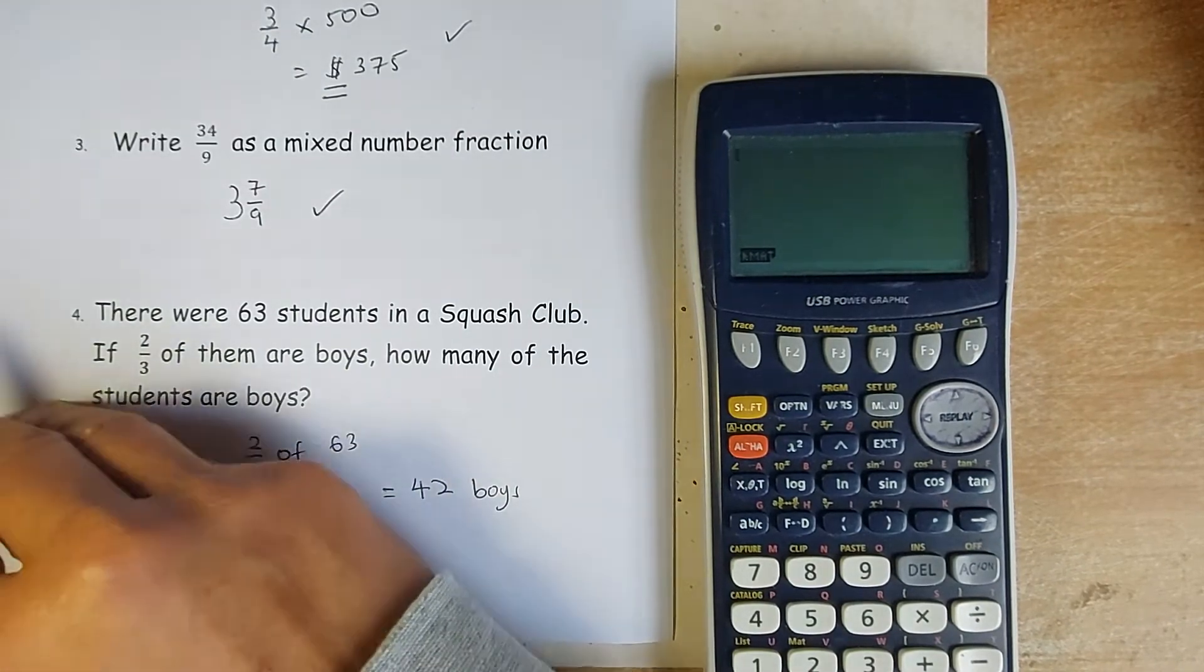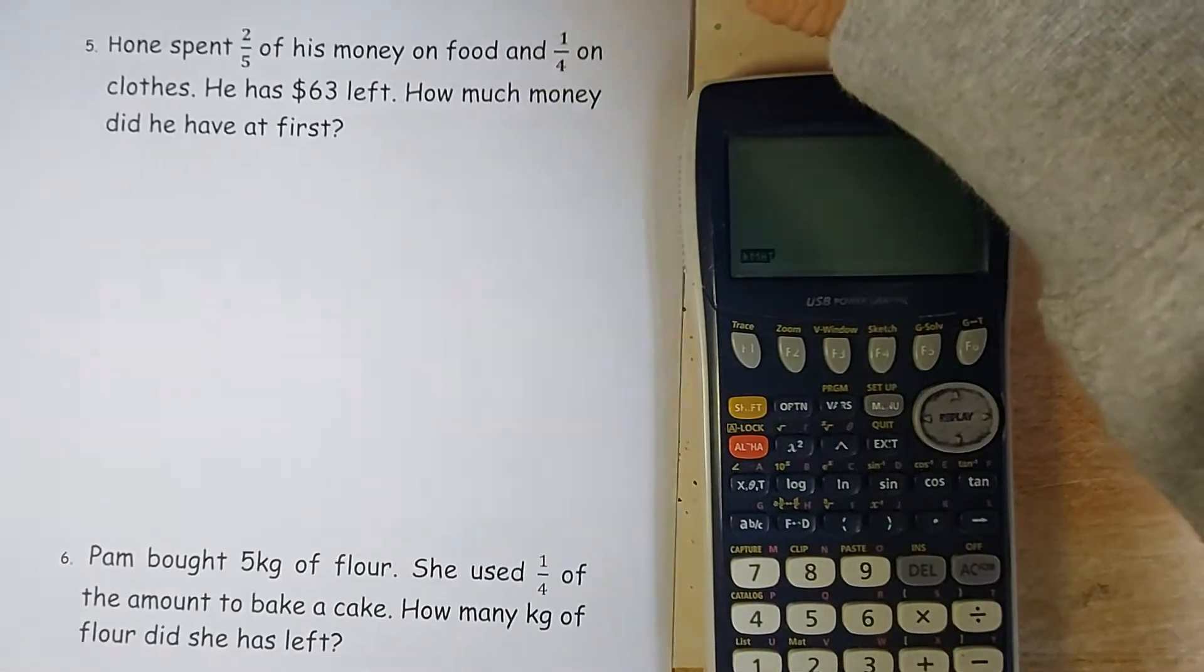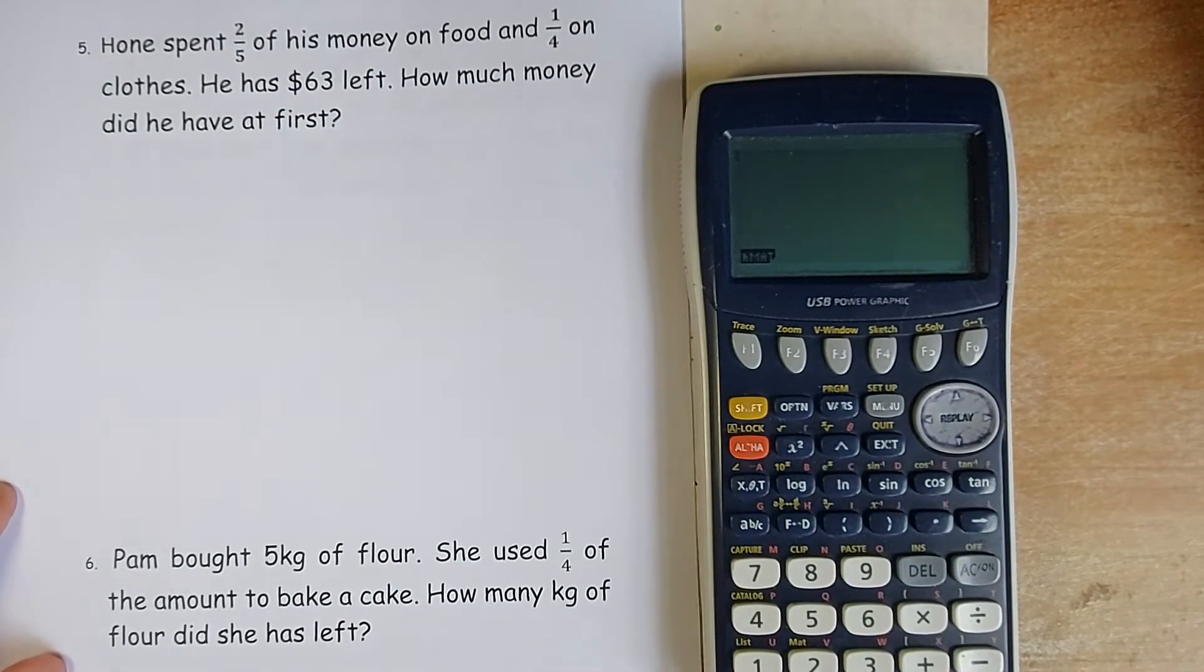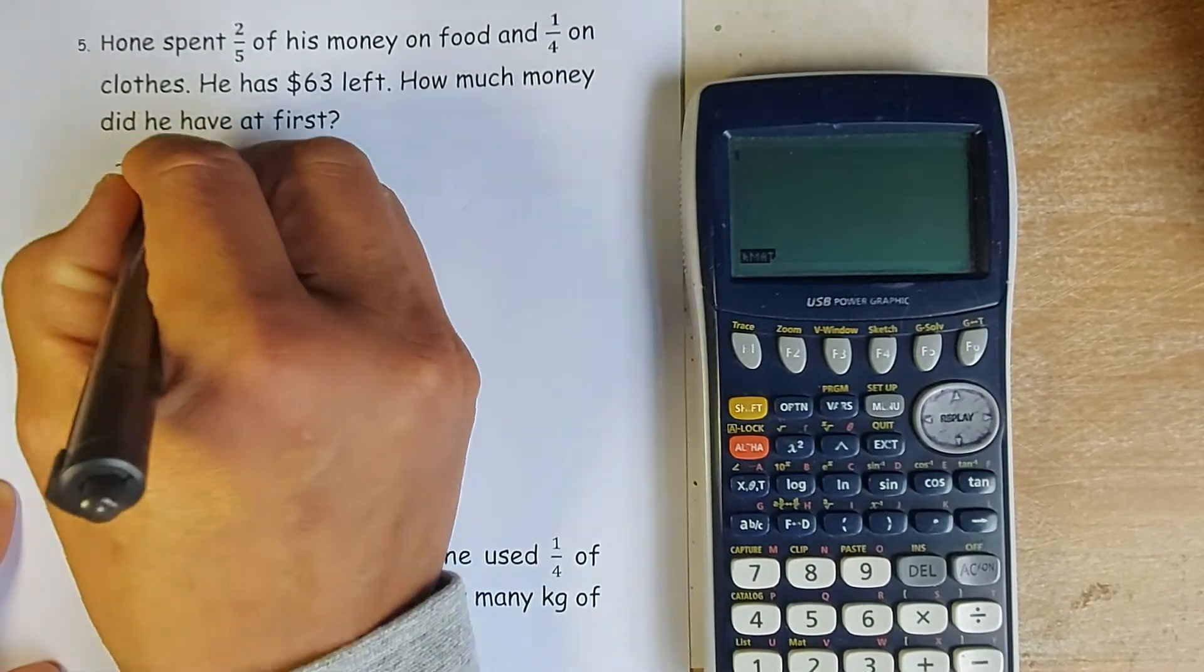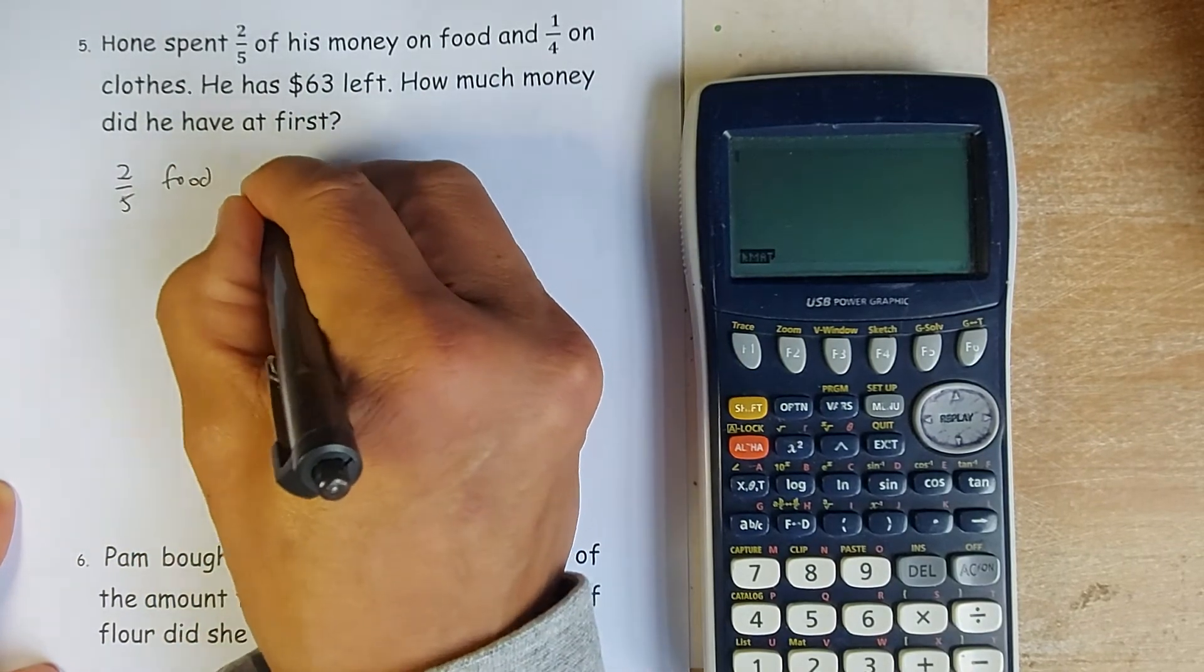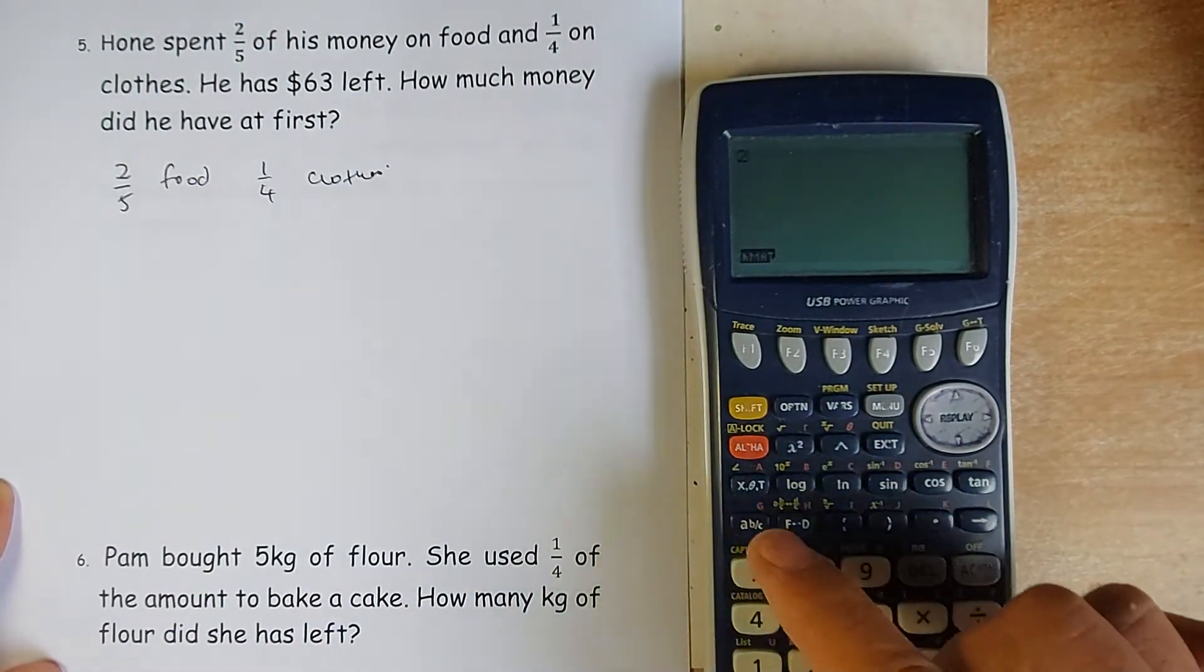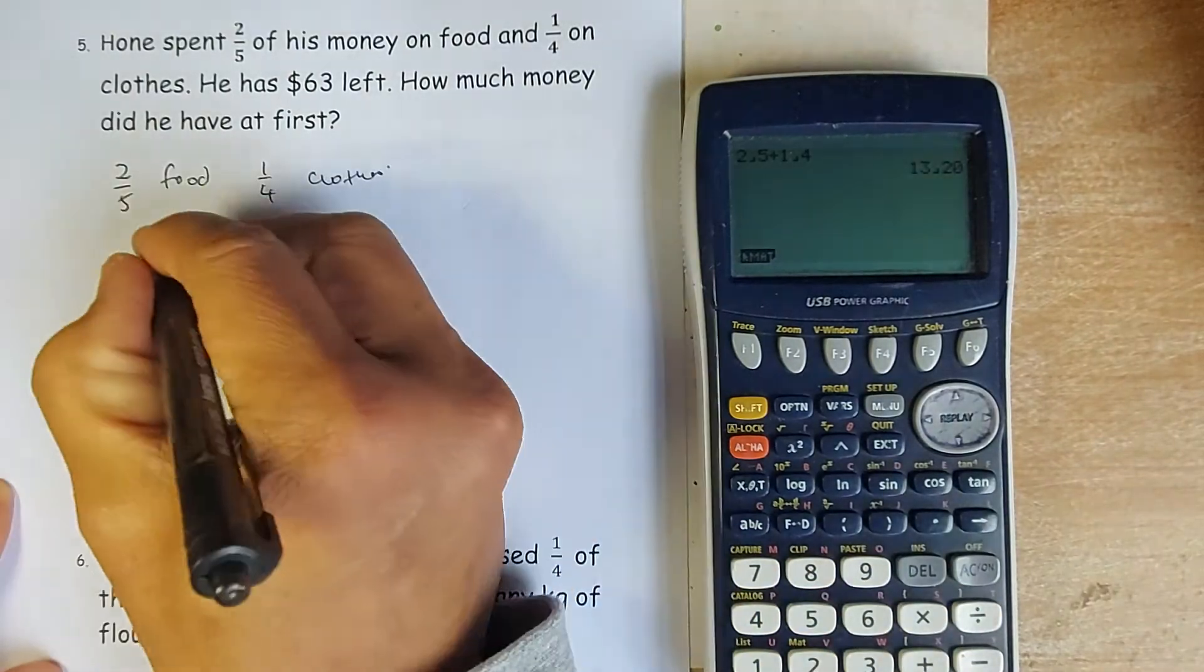Let's go to page 2 now. Page 2 is getting a harder word problem and we shall look at it now. The question is Hone spent 2 fifths of his money on food, 1 quarter on clothes. So 2 fifths on food and 1 quarter on clothes. So when you add these two, food and clothes, you get 2 fifths plus 1 quarter. You're going to get 13 over 20.